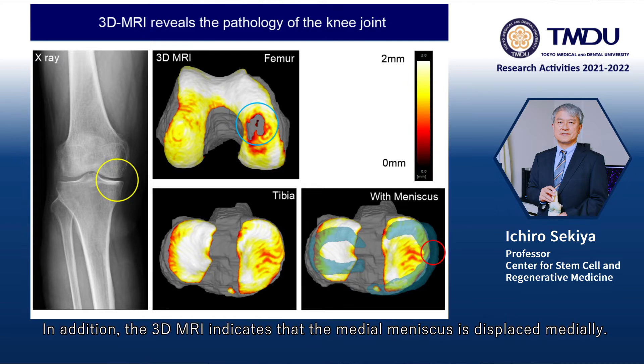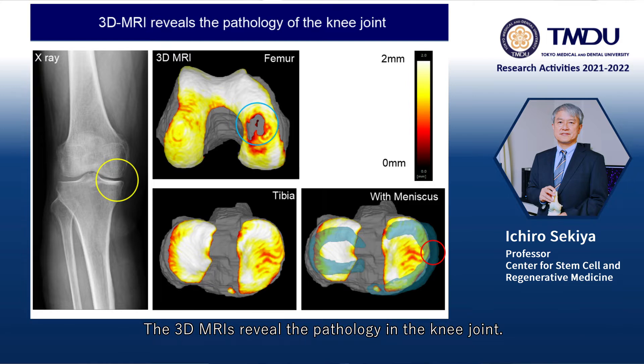In addition, the 3D MRI indicates that the medial meniscus is displaced medially. The 3D MRI reveals the pathology in the knee joint.